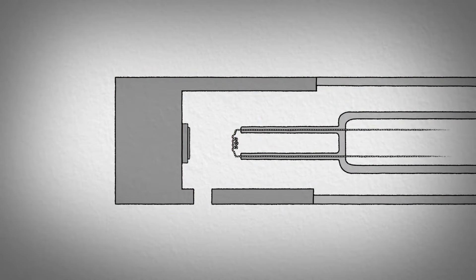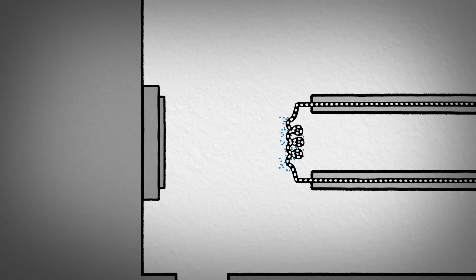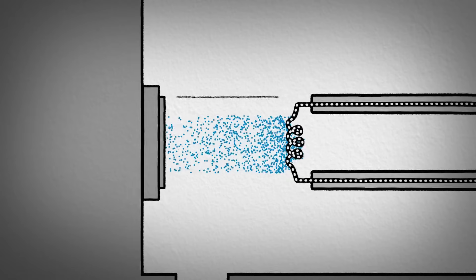When electricity is run through the filament, electrons are boiled off. The electrons are accelerated towards the anode with a strong electric field.